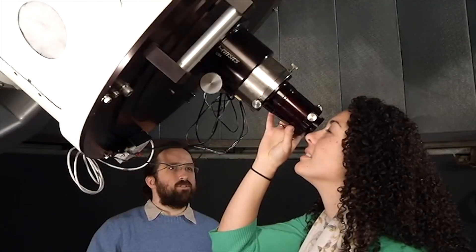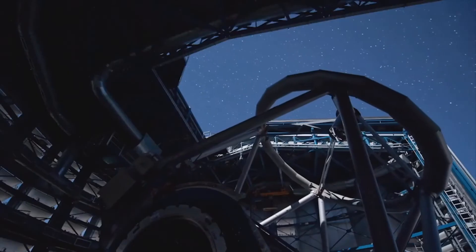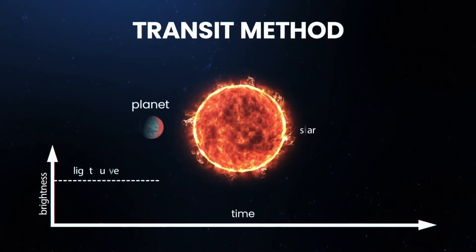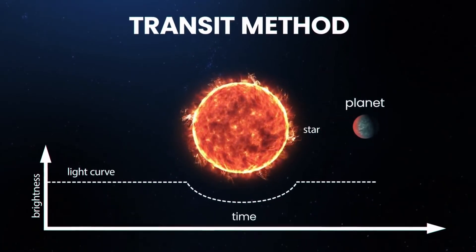One method is to watch the star's position. A planet's gravity will tug slightly on the star, causing it to wobble back and forth. The bigger the planet, the bigger the wobble, and therefore the easier it is to detect. We can also watch for a temporary dip in the star's brightness, caused by a planet passing in front of the star during the planet's orbit.